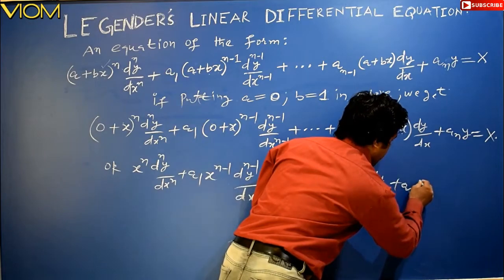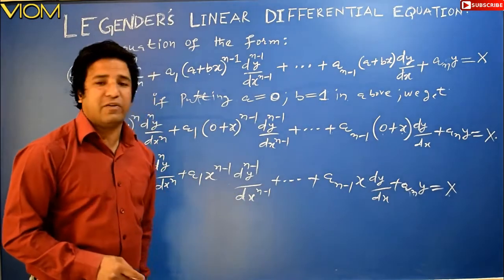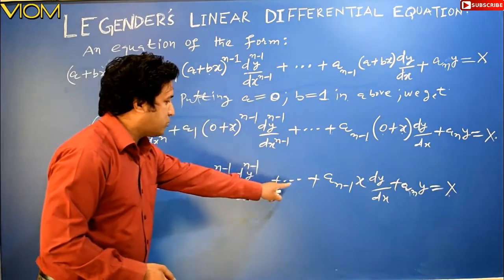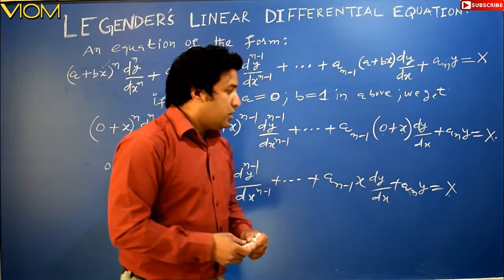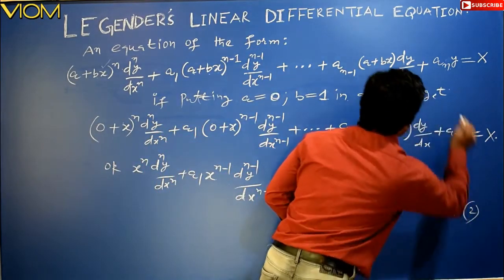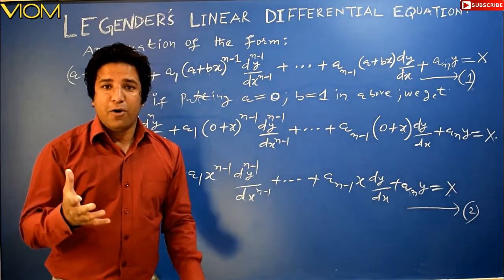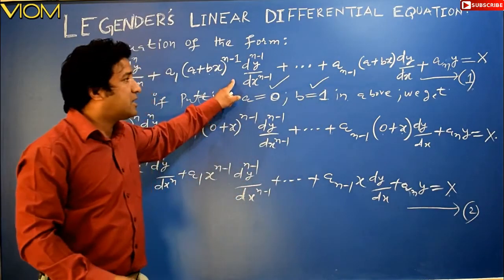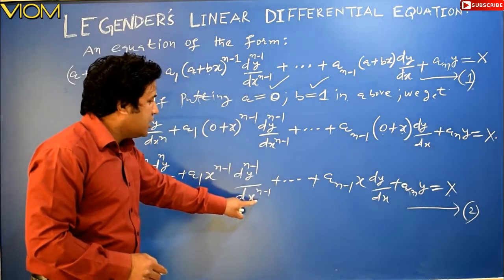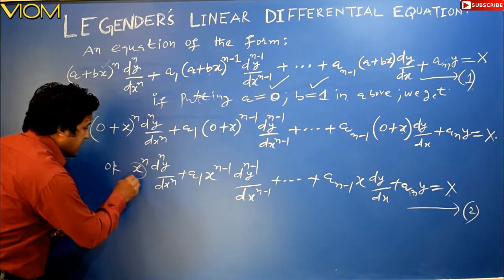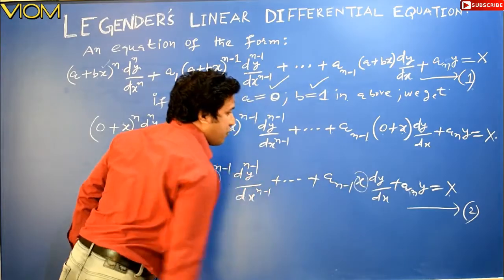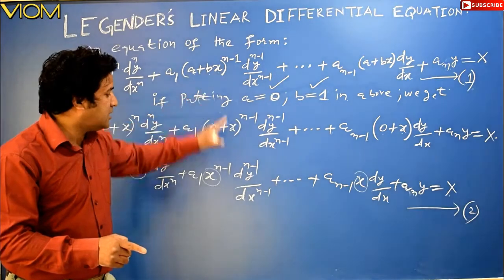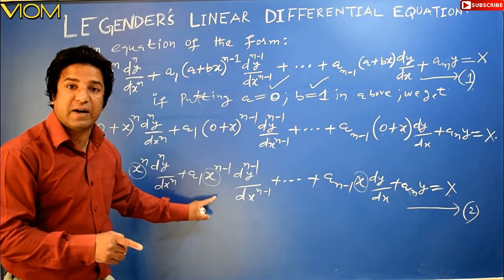This resulting differential equation — x^n (d^n y/dx^n) + a₁ x^(n−1) (d^(n−1)y/dx^(n−1)) + ... + a_(n−1) x (dy/dx) + aₙy = X — is nothing but Cauchy's Homogeneous Linear Differential Equation, which was our previous topic. So when a = 0, b = 1 is substituted into Legendre's differential equation, it is converted into Cauchy's Homogeneous Linear Differential Equation.